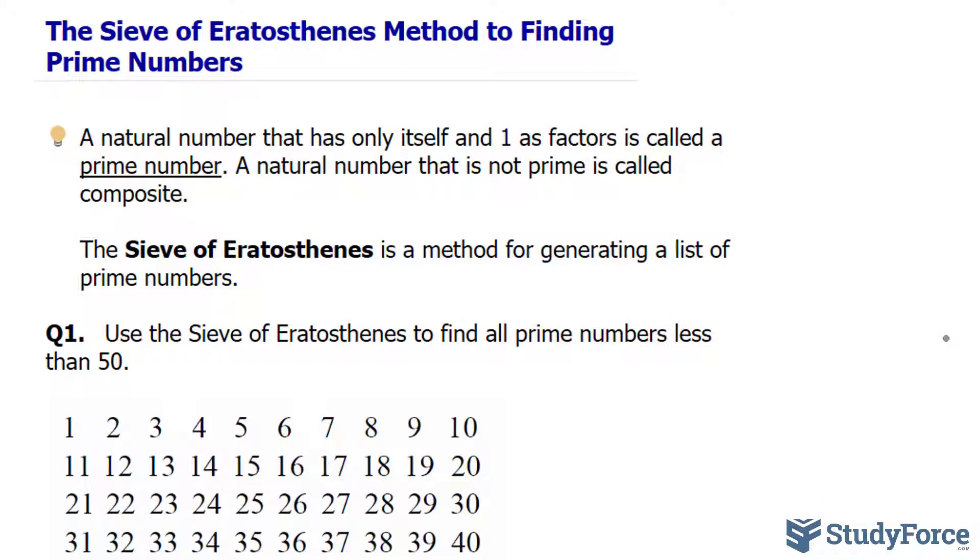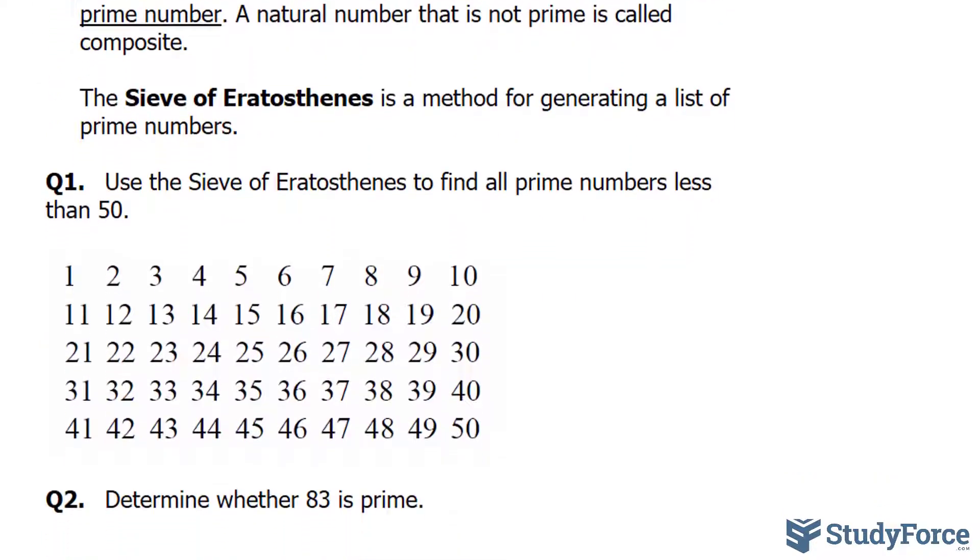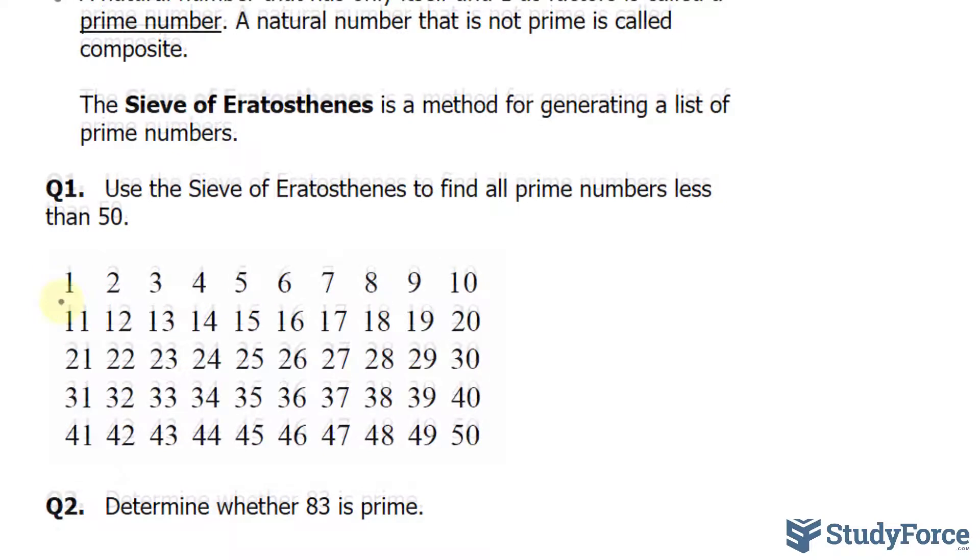The question asks us to find all prime numbers less than 50. The first step is to write down all natural numbers from 1 through 50. Once you've done that, cross out 1 because 1 is not a prime number.